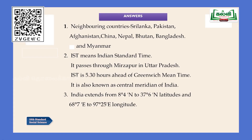Answers: The neighboring countries of India are Sri Lanka, Pakistan, Afghanistan, China, Nepal, Bhutan, Bangladesh, and Myanmar. For the importance of IST: IST means Indian Standard Time; it passes through Mirzapur in Uttar Pradesh; IST is five and a half hours ahead of Greenwich Mean Time; and it is also known as the central meridian of India. All four points are very important to write for this question.